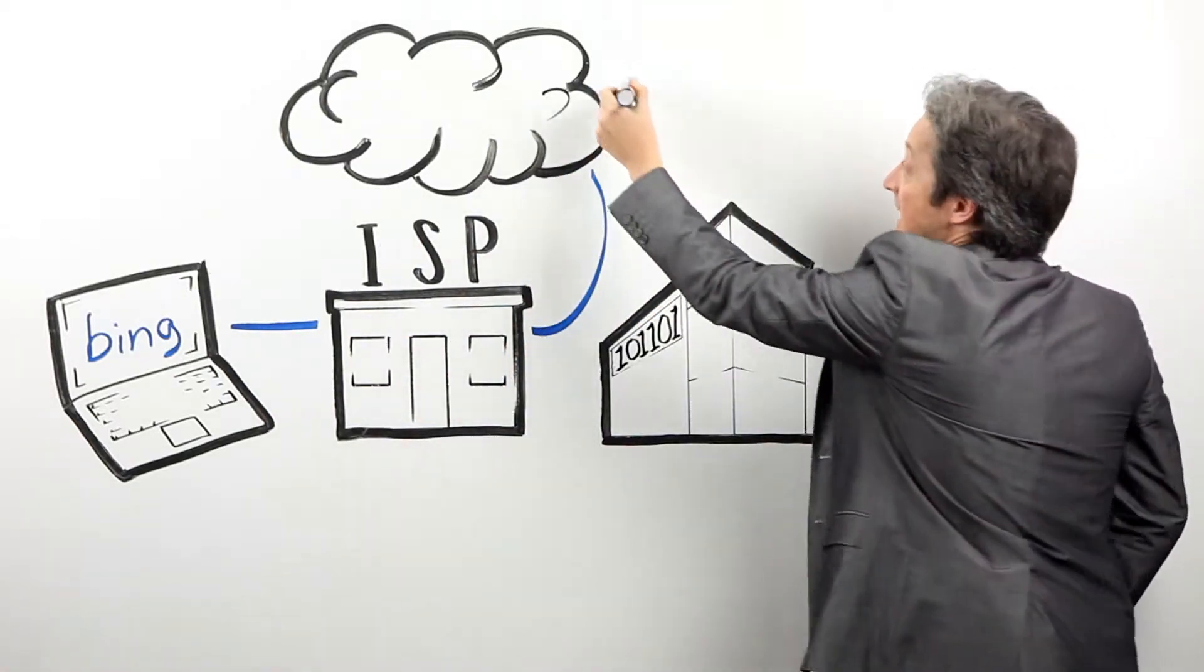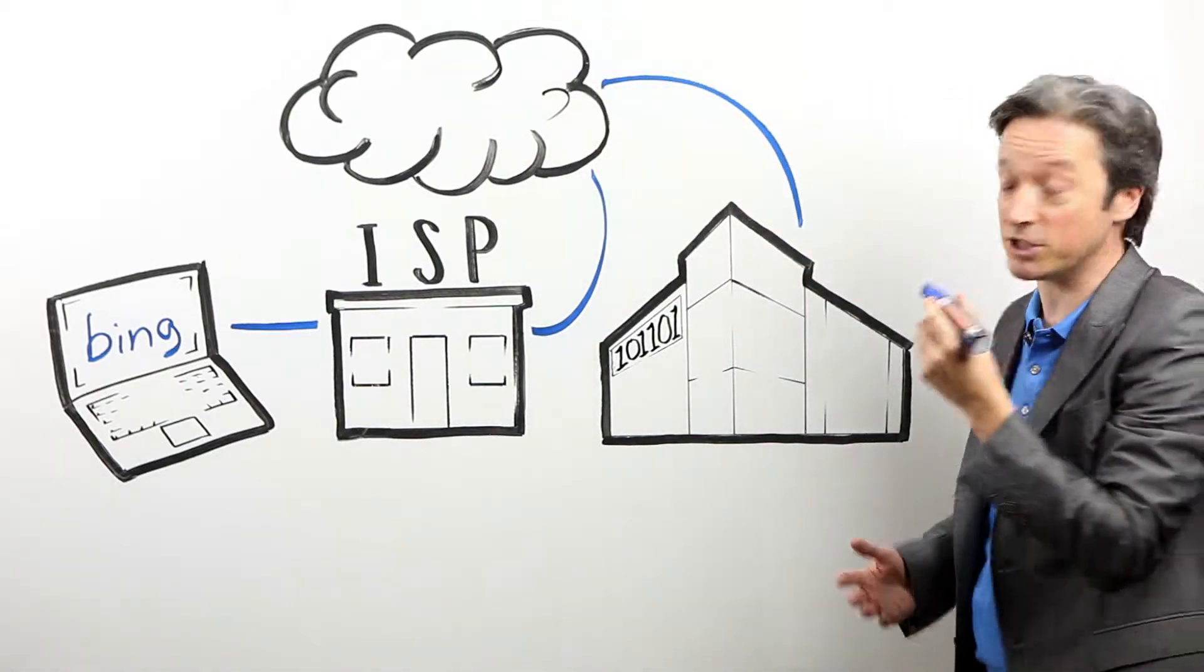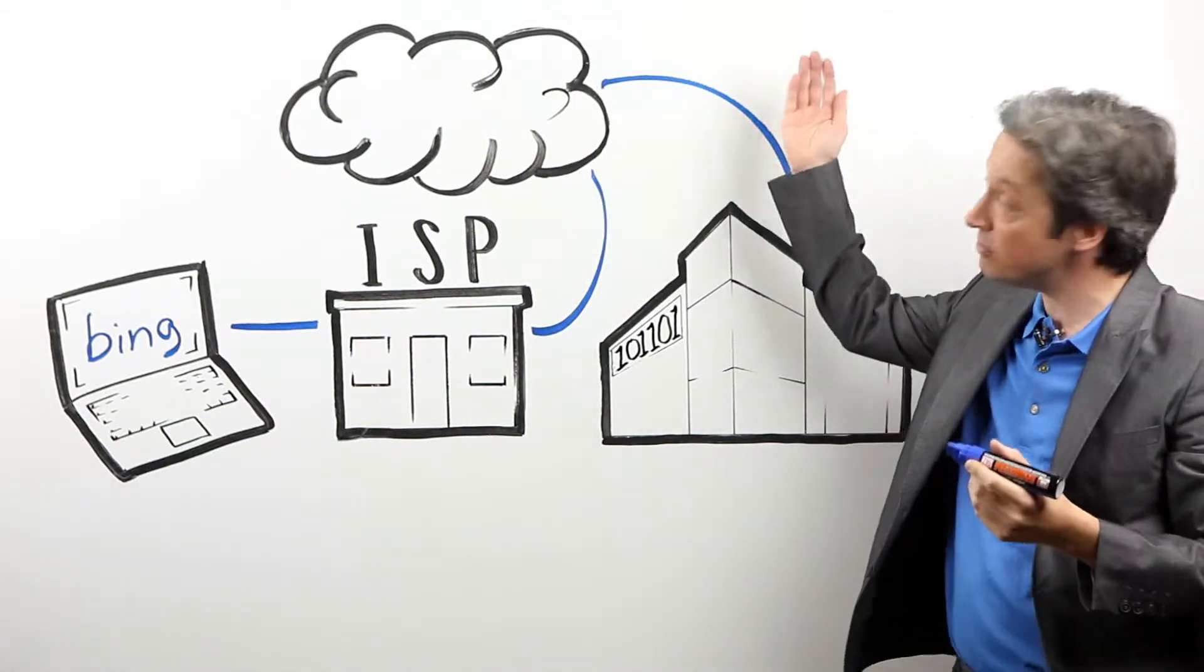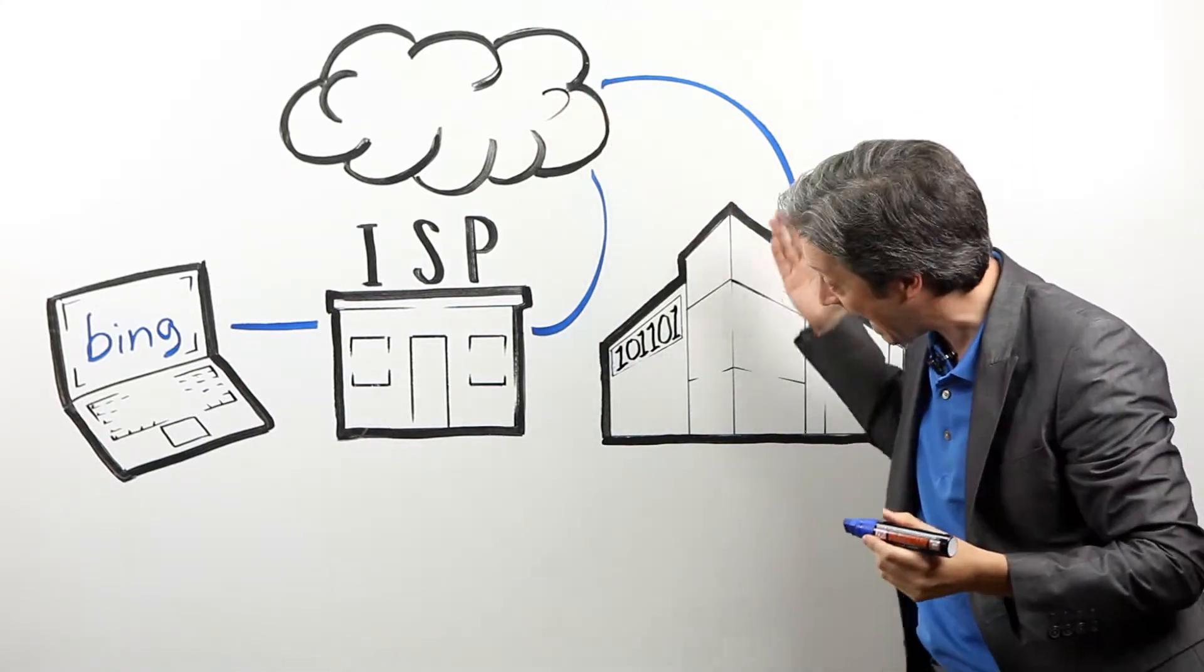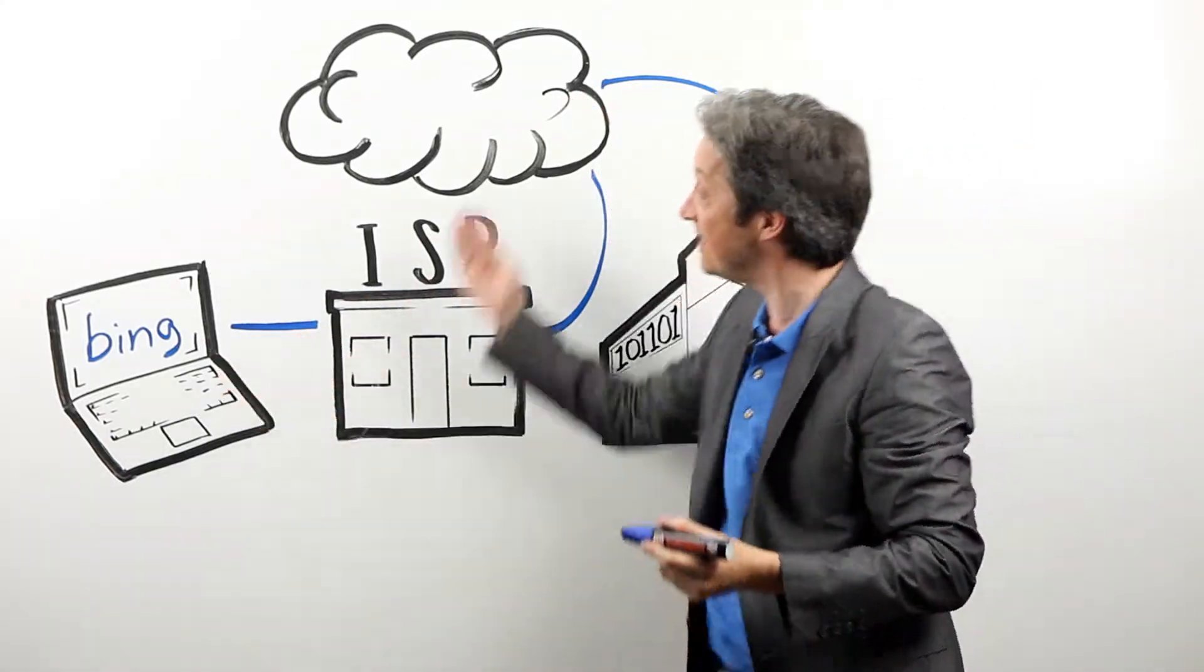The internet connects the Bing servers. Then the Bing servers respond and return the results through the same middle mile network and ISP that connect you to the internet.